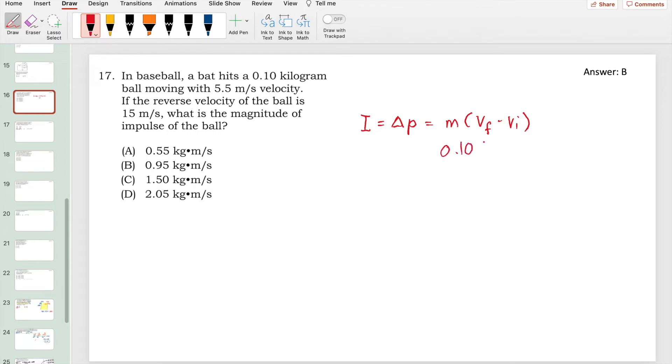Now, the mass is 0.10 according to the problem, and then the final velocity and the initial velocity. The initial is the moving forward ball, which has a positive 5.5 meters per second, while the final is the reverse velocity, and that is a negative velocity in a negative direction.